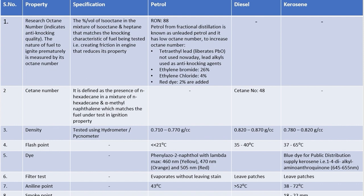Cetane number is defined as the percentage of N-hexadecane in a mixture of N-hexadecane and alpha-methylnaphthalene that matches the ignition property of the fuel under test. For diesel, the cetane number is 48.